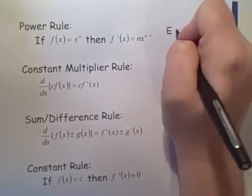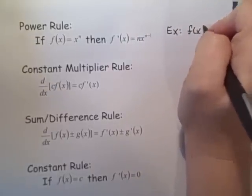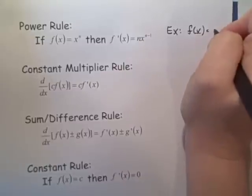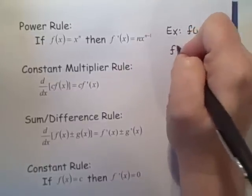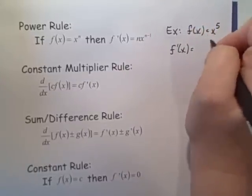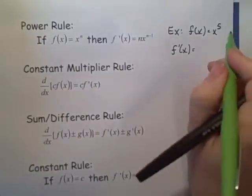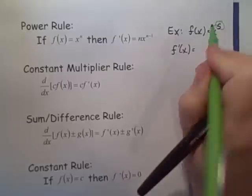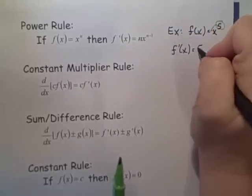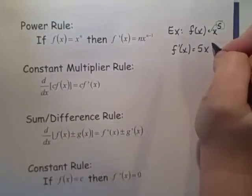So for example, if we have f of x equals x to the fifth, then f prime of x — we're going to bring this exponent down in front. We're going to have five x to the one less, so that's going to be four.